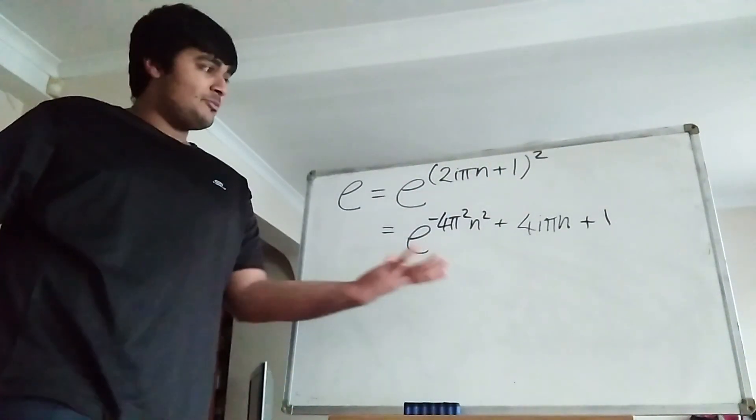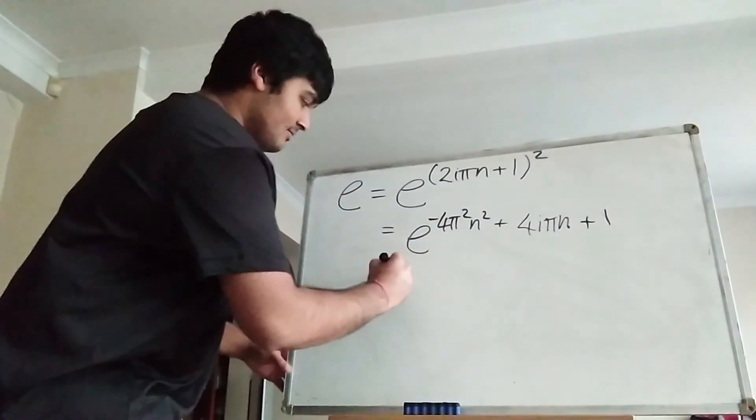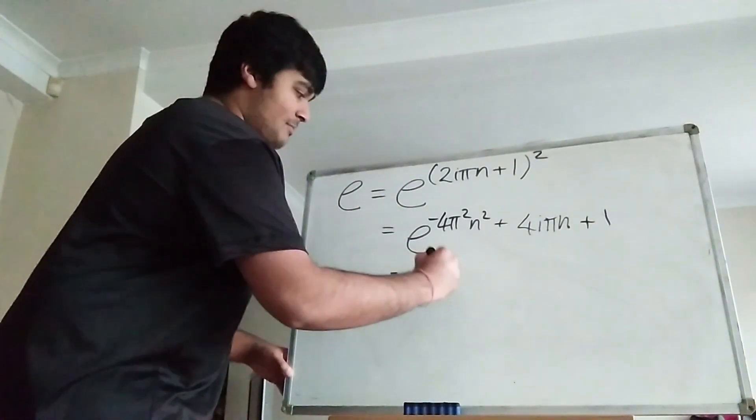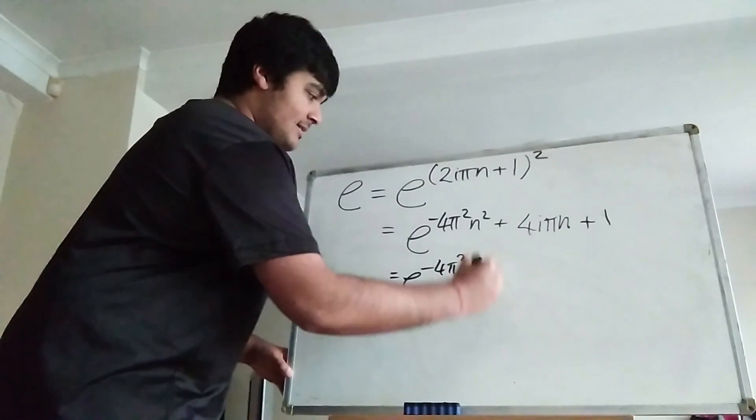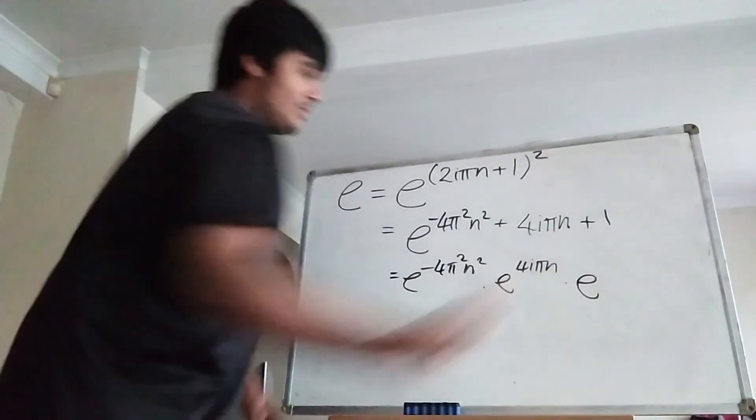Now, of course, again, by exponent rules, I can split this into the product of 3 exponents. So it's just e to the minus 4 pi squared n squared times e to the 4i pi n times e to the 1, which is just e.